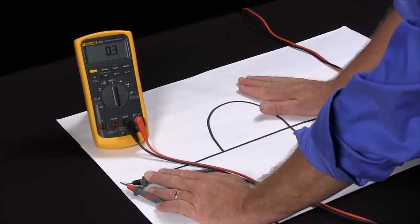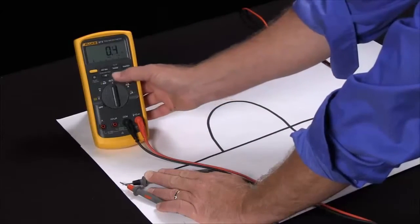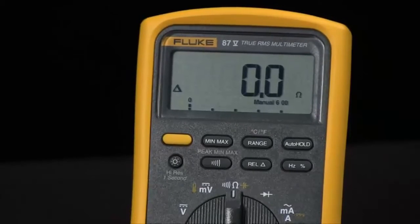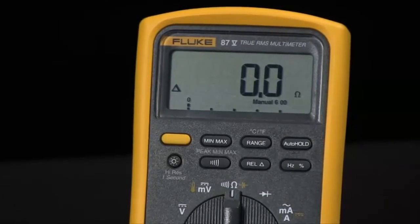If I want to measure something accurately, I either have to mentally subtract that, or if I hit the relative mode, it takes that reading and makes it zero. So now everything I measure will have that subtracted out of it, and I'll get a more true reading.